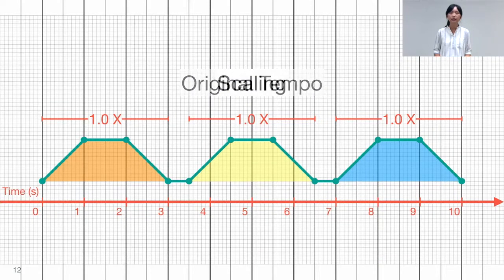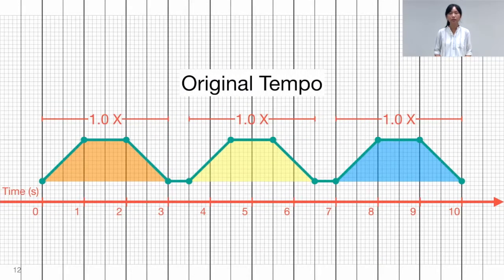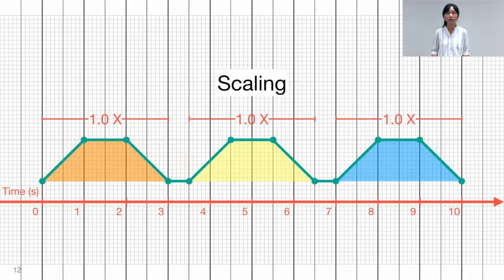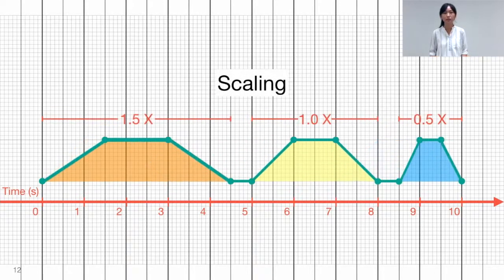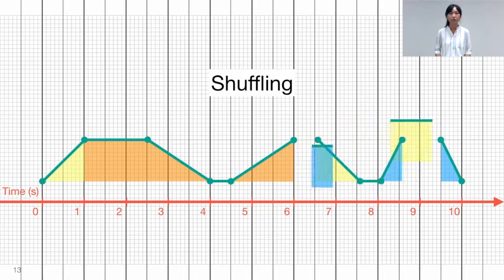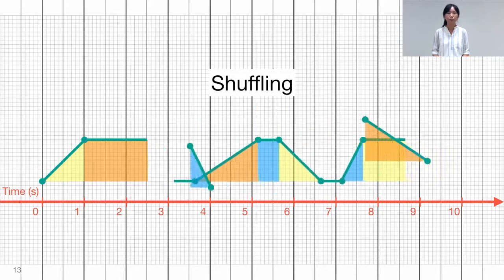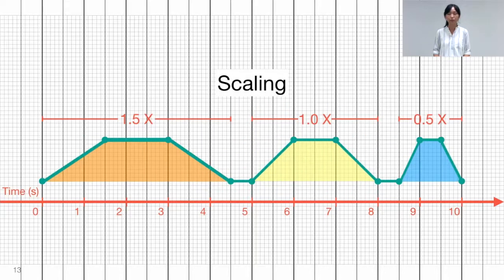Scaling changes the duration of repetitions while maintaining the target tempo ratio within a single repetition. After scaling, shoggling swaps the duration of the same tempo phase across two or more scaled repetitions.